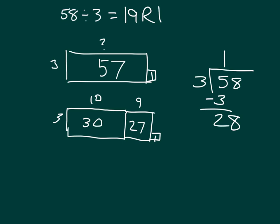And when we divided 28 by 3, we got 9, because 9 times 3 is 27, and 28 minus 27 is 1. So our remainder is 1. That length of the unknown side is 19, and there is 1 square unit remaining.